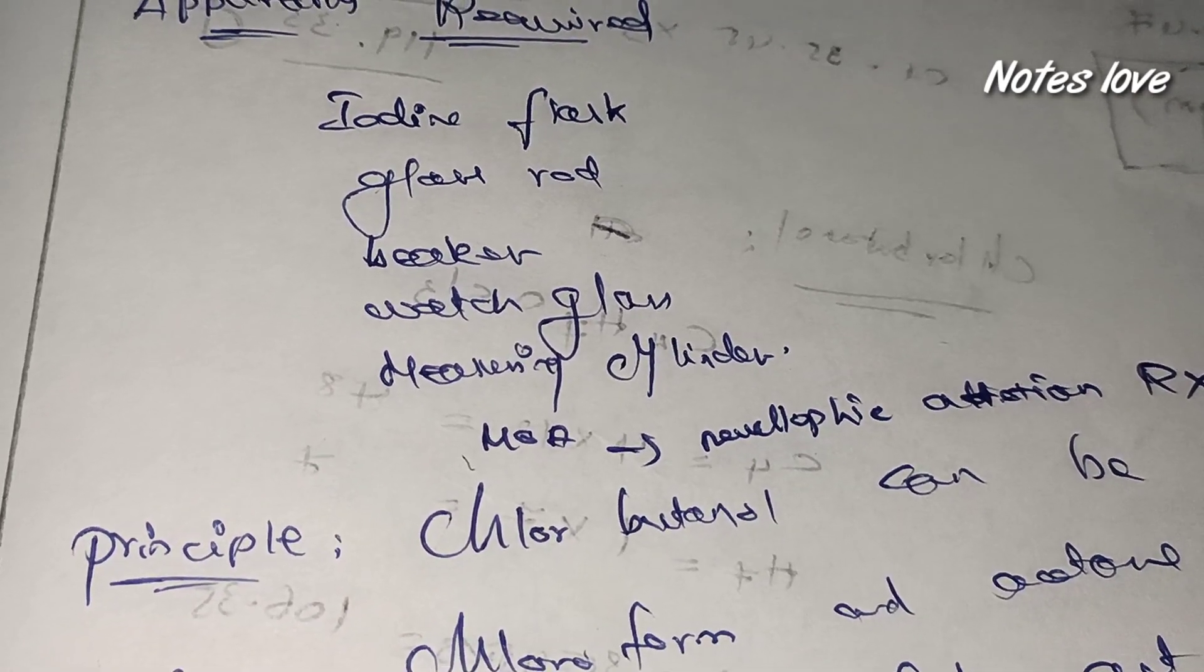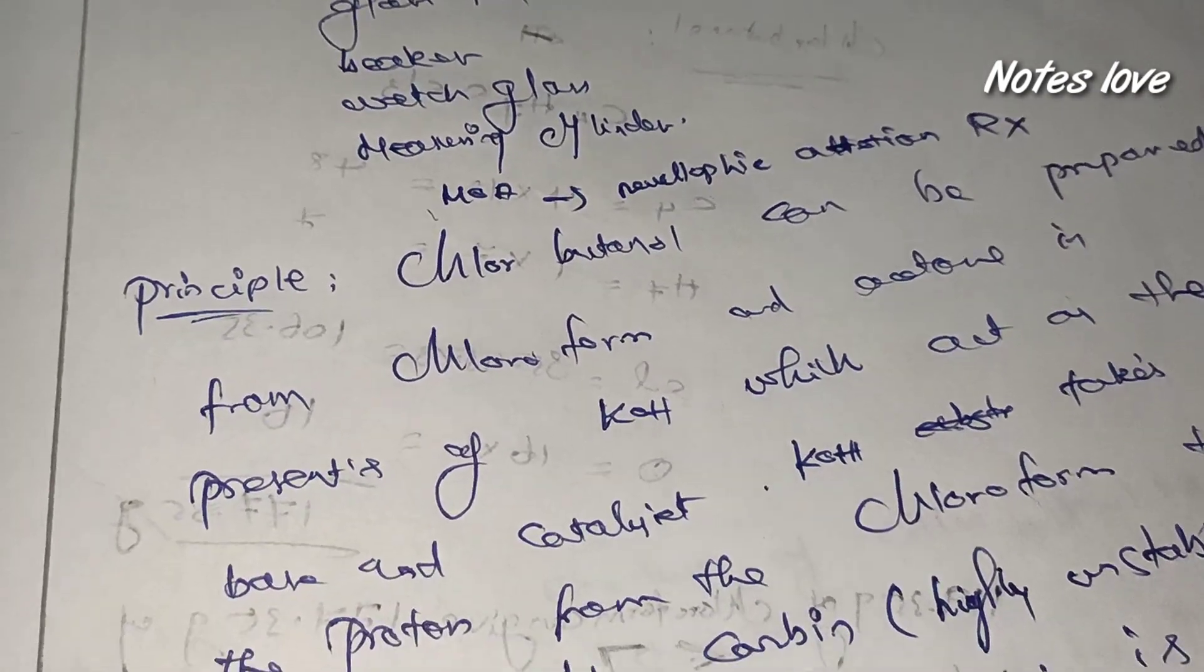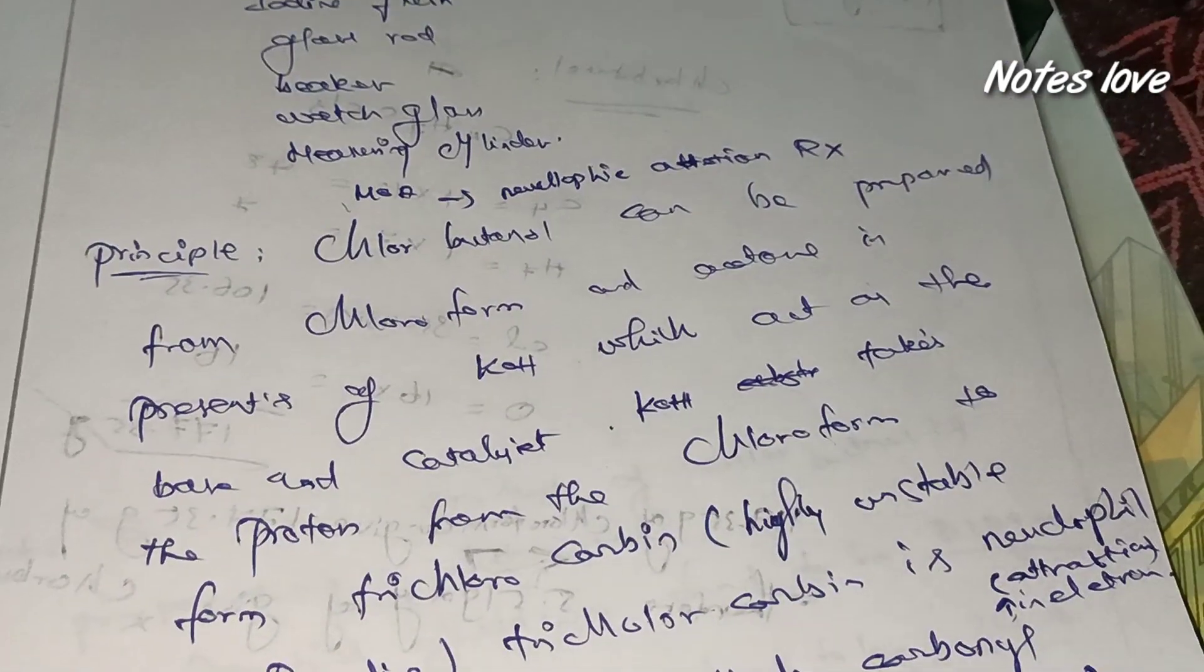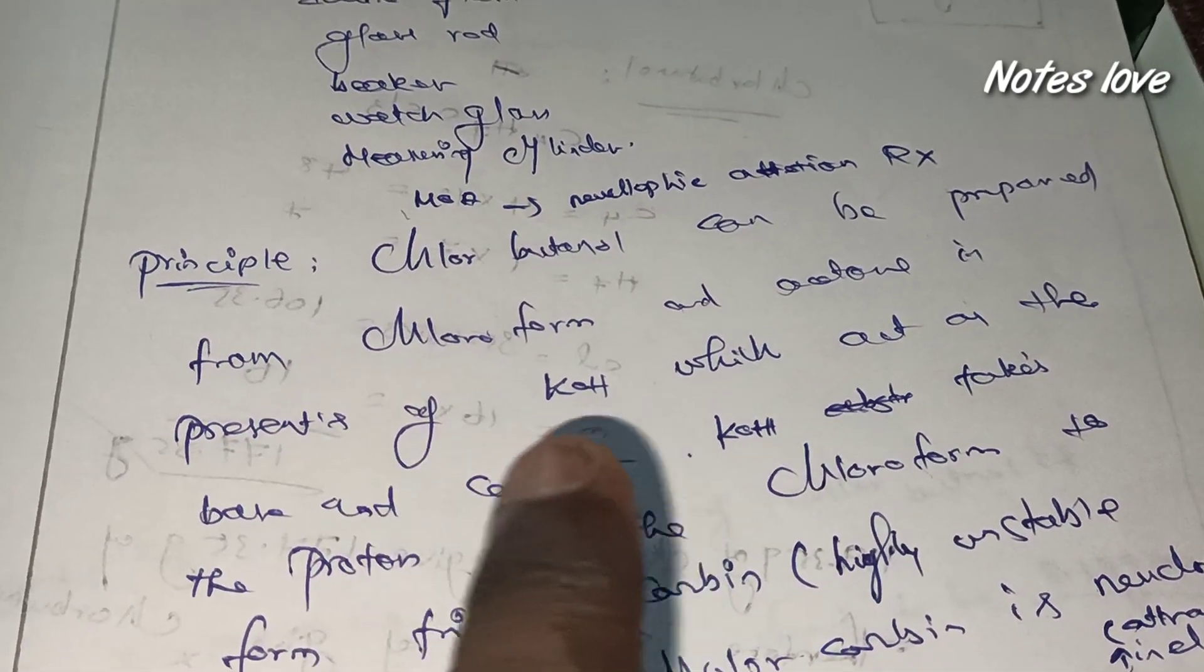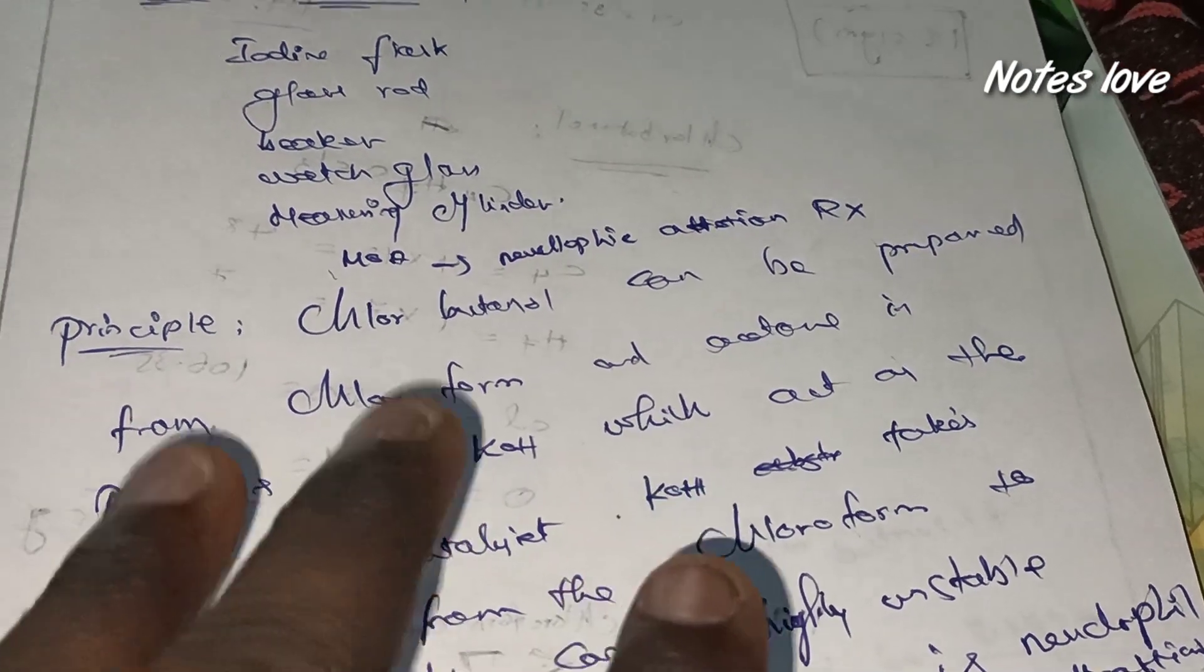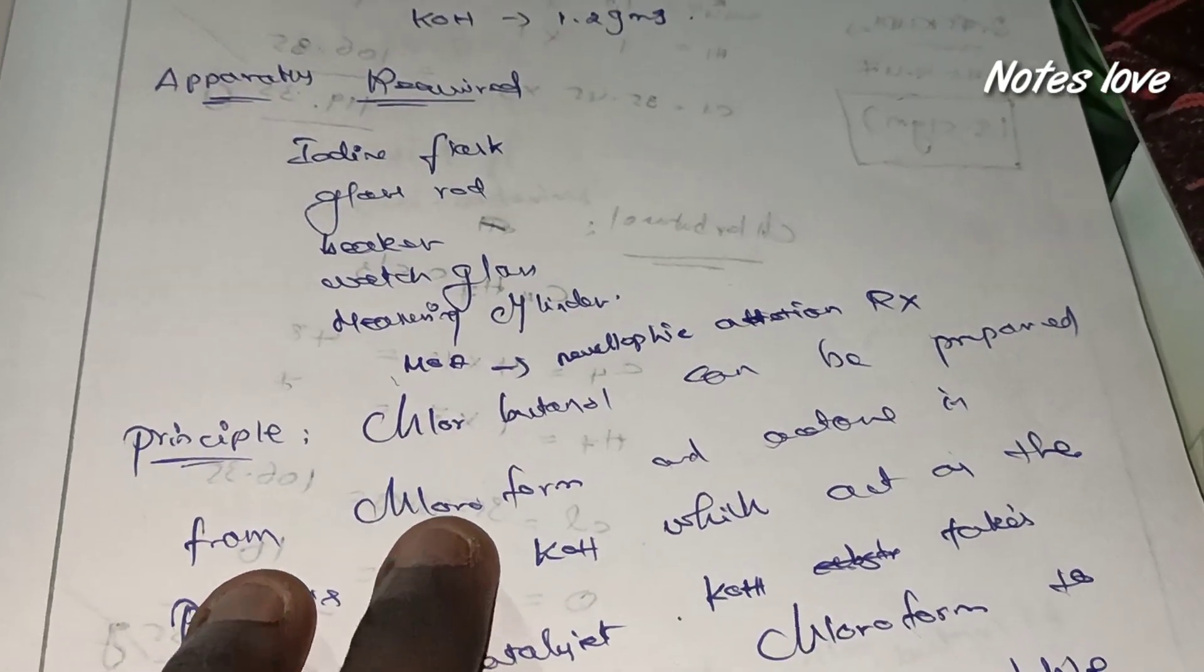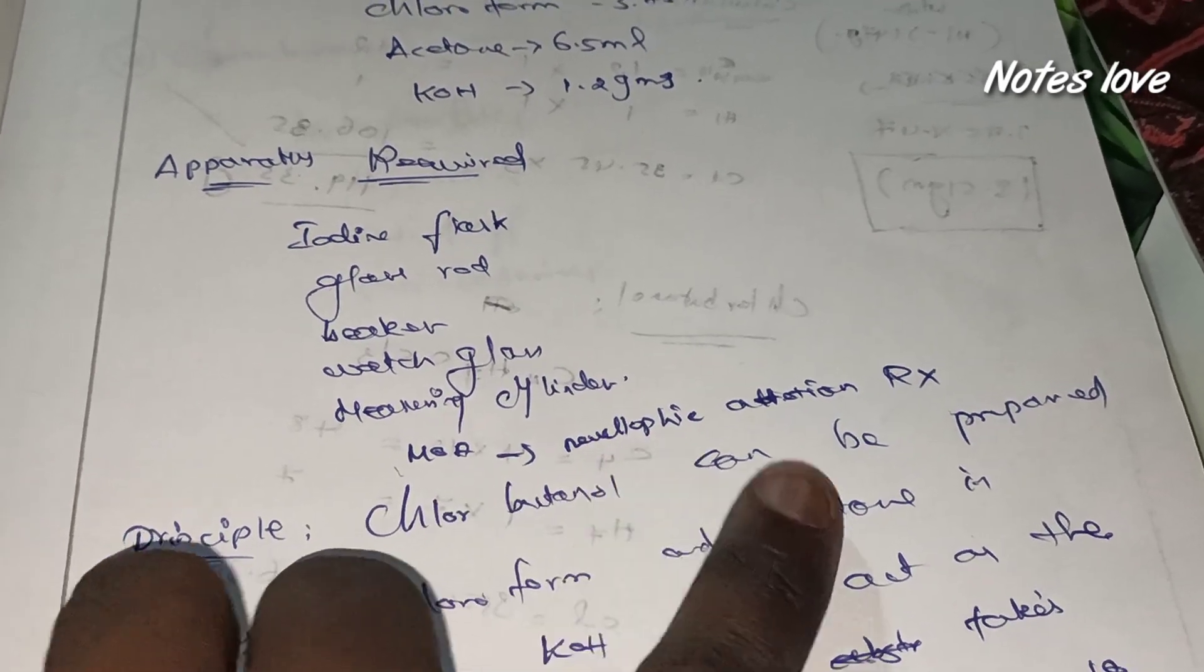This is the principle: chlorobutanol can be prepared from chloroform and acetone in presence of potassium hydroxide. In this experiment, what is the mechanism of action? Nucleophilic addition reaction occurs in the chlorobutanol.